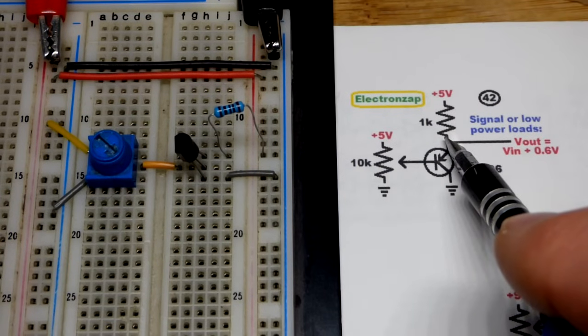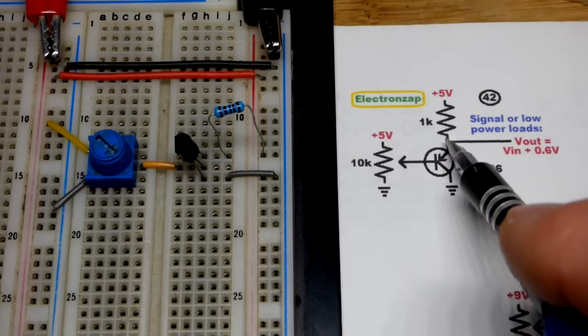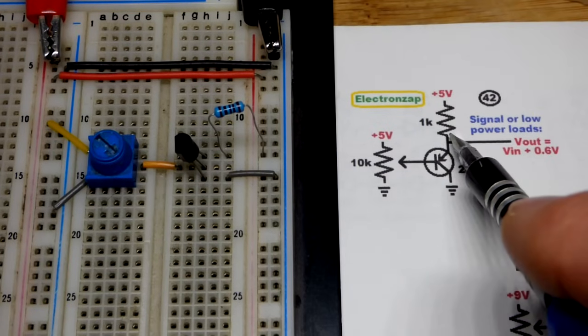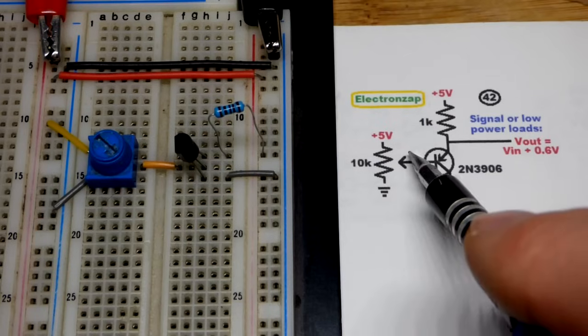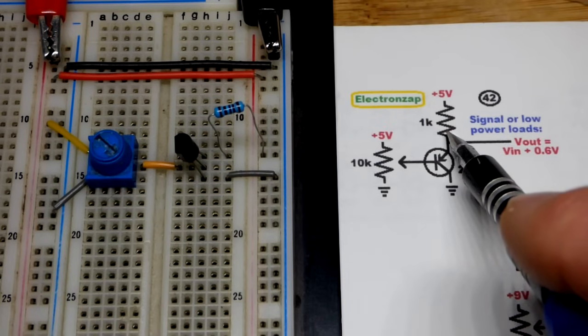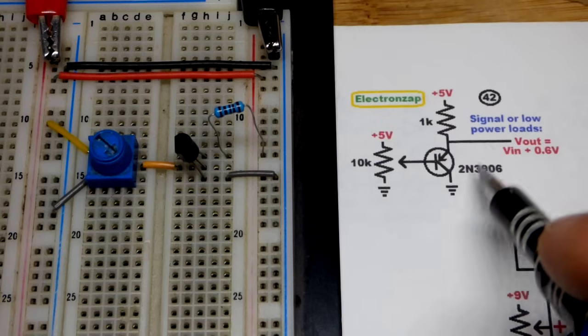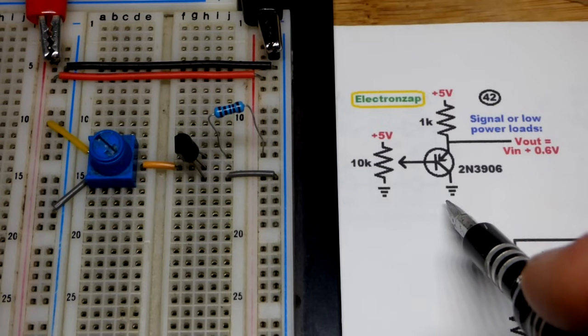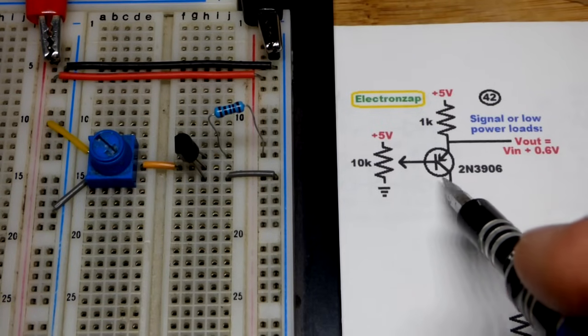Instead we have an emitter to deal with. And since it's the PNP, it's going to be a slightly higher voltage, about 0.6 volts approximately, at the emitter versus the base right there. So it's an emitter follower, and you can also call it a common collector. That's because the collector is directly to the supply right there.